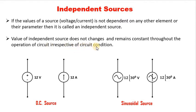This is irrespective of the circuit condition. What do we mean by circuit condition? If in a circuit a certain branch gets disconnected or a new branch gets added, that will not affect the value of my independent source. So this is what we mean when we say independent sources.